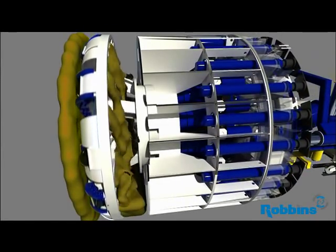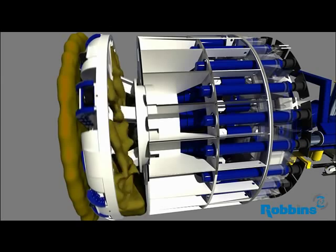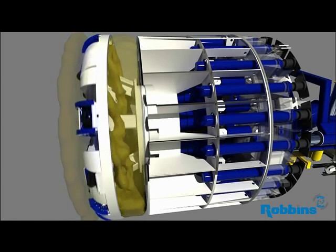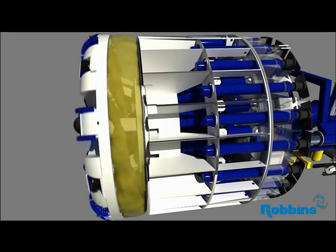During the excavation process, ground material or muck moves through the cutter head to a mixing chamber. Inside the chamber, the muck is pressurized and holds the tunnel face.